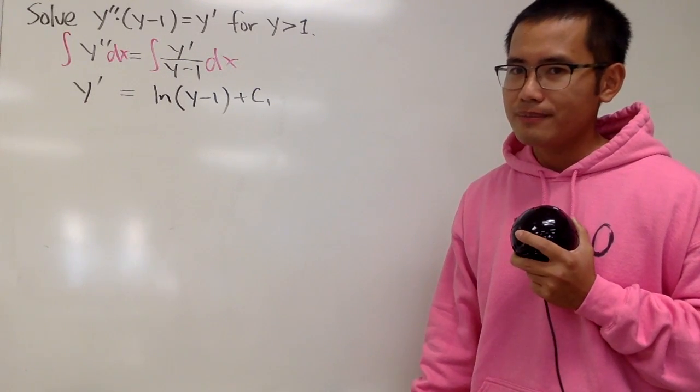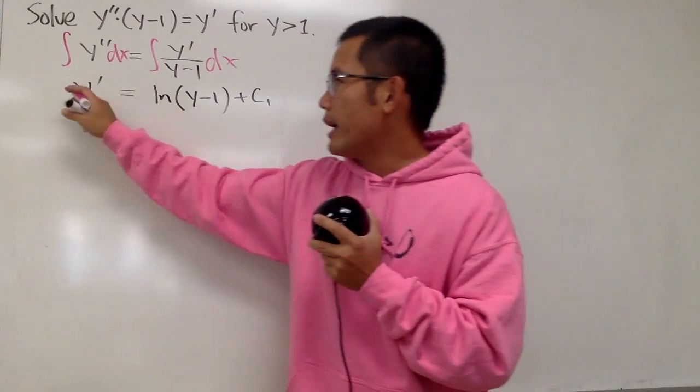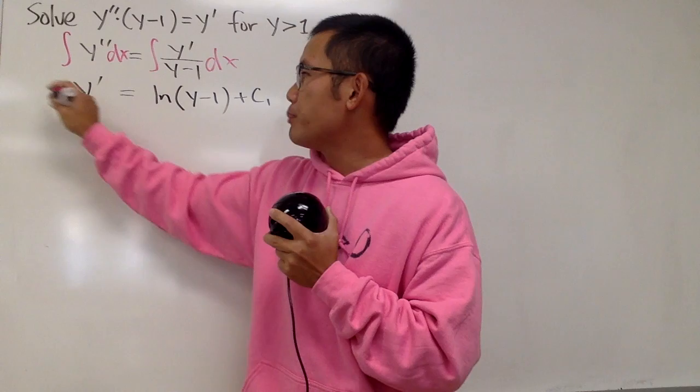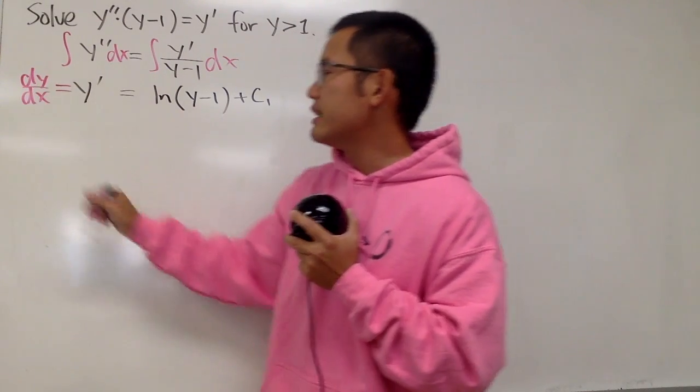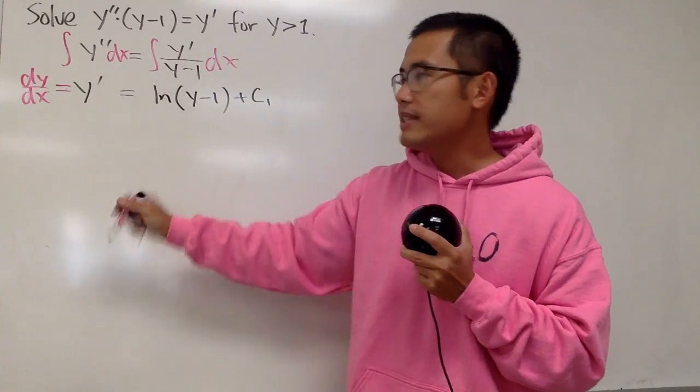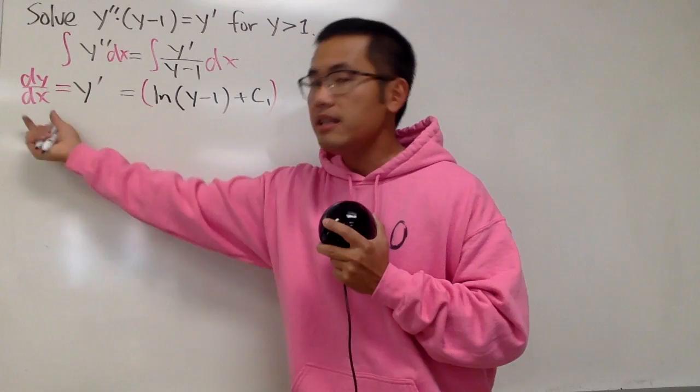But how can we solve this though? Yes, we can do separating the variable. So, right here, notice y' is of course the same as dy/dx, and we will just divide this on both sides, and remember it's the whole thing on both sides, and multiply the dx on both sides.